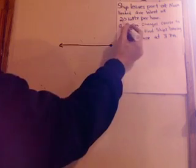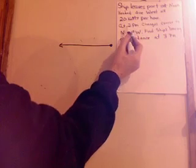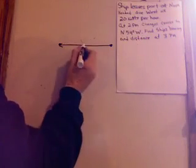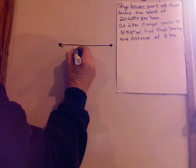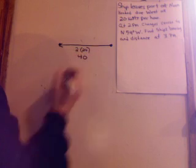Now, I'm going 20 knots per hour at 2 p.m. So if I left at noon, and then at 2 p.m., something happens. I'm changing direction. So 20 knots per hour for 2 hours. So this distance is 2 times 20, or 40.